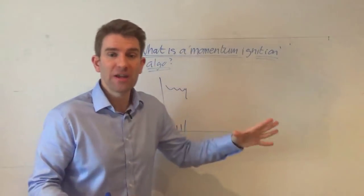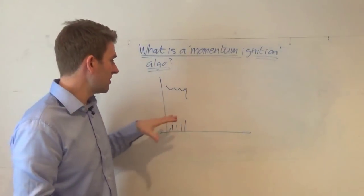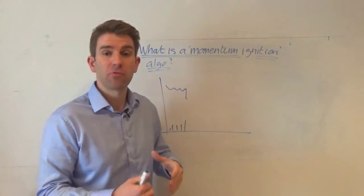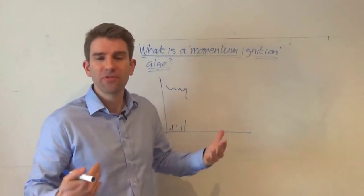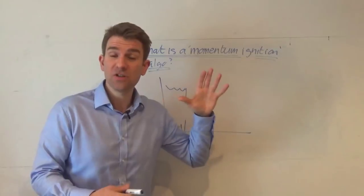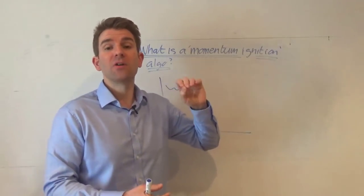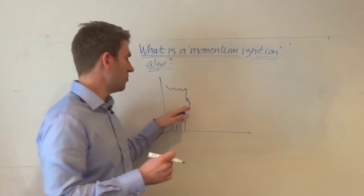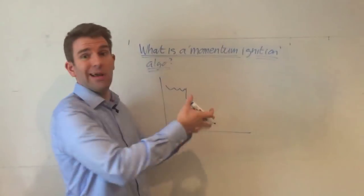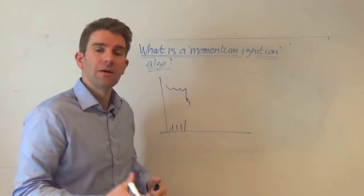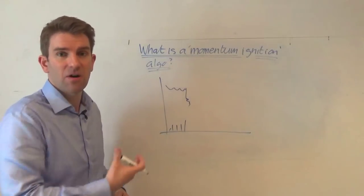So they're almost spoofing other algos by saying hey this is news, news is coming out, jump on board. So they're trying to create this momentum ignition. They've picked obviously the stocks and the levels and the prices and the time when this would apply best to them, create that momentum ignition when it costs them the least amount of money and they think they've got a big profit potential.